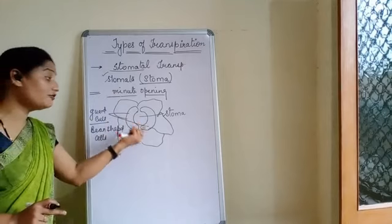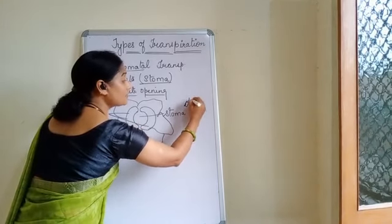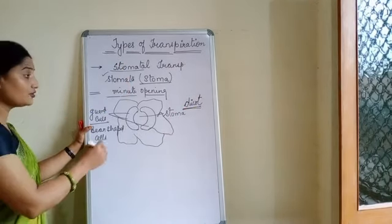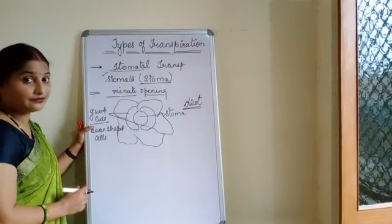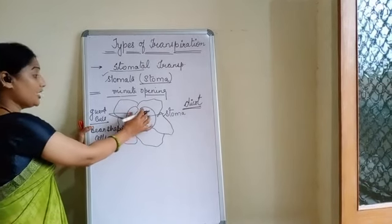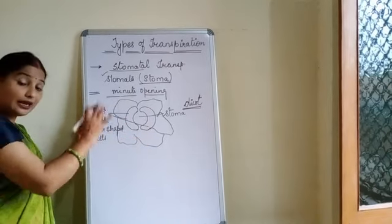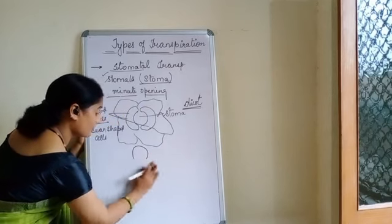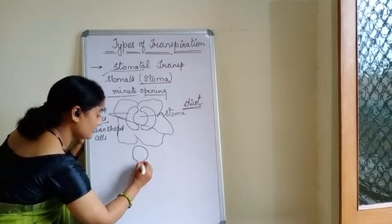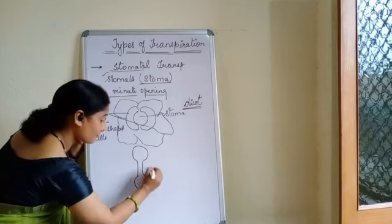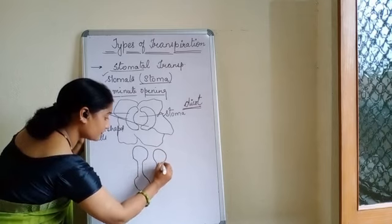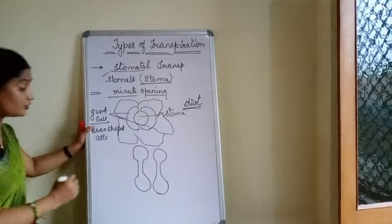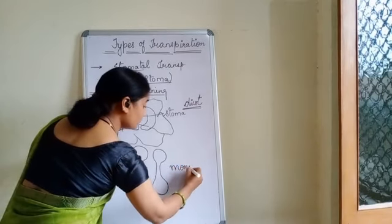This is the special feature in case of dicot leaves. You know the meaning of dicot as well as monocot. In case of dicot, the leaf is also called a dorsiventral leaf. We can see the shape of the guard cell is bead-shaped. In case of monocot, we can see the guard cell as a dumbbell shape. This is the special feature in case of monocot.